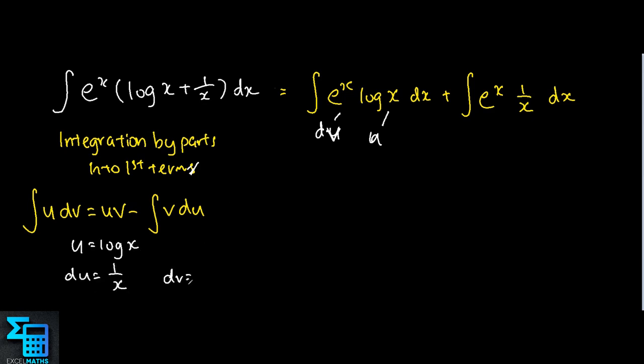dv is e^x, while v is e^x. Now we use this formula in our next step.